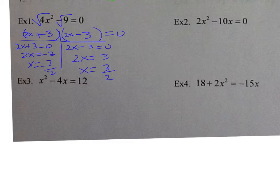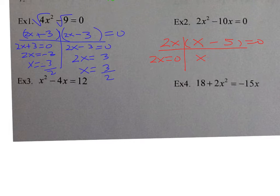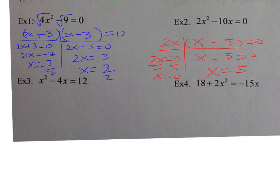Let's take a look at number 2. Check for GCF first, and I notice there is a GCF — the GCF is 2x. Inside the parentheses, 2x times x gives me 2x squared, and 2x times 5 gives me 10x. T-chart, set each factor equal to zero, then solve. Divide by 2, we get x is equal to 0. And x is equal to 5.